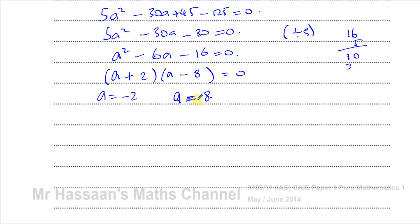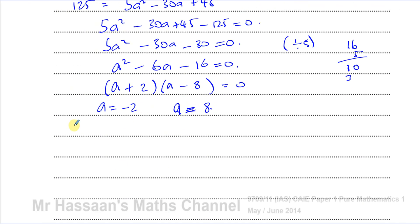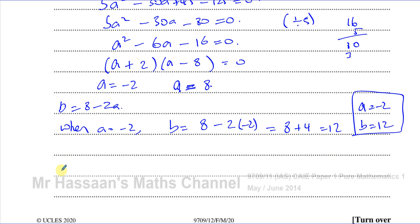So now we haven't finished yet because we have to find the values of a and b. I know b is 8 minus 2a. So when a equals negative 2, b equals 8 minus 2 times negative 2, which equals 8 plus 4, which is 12. So a equals negative 2 and b equals 12. That's one pair of solutions. And when a equals 8, b equals 8 minus 16, which is negative 8. So when a equals 8, b equals negative 8. There are two pairs of solutions here.